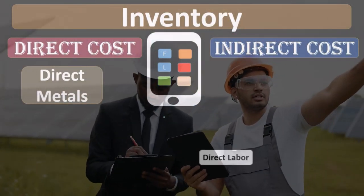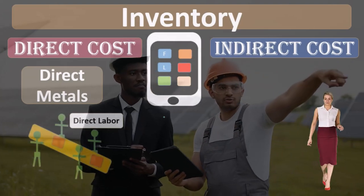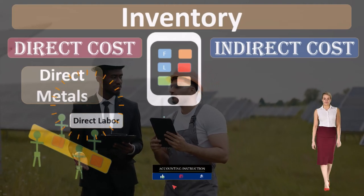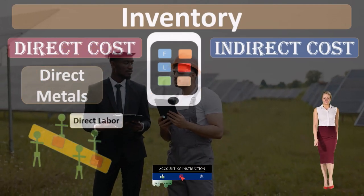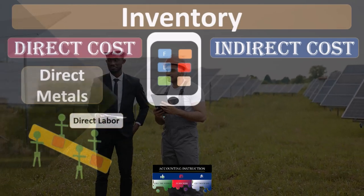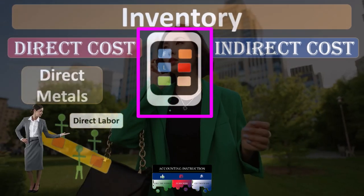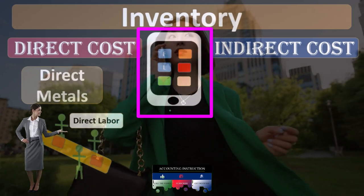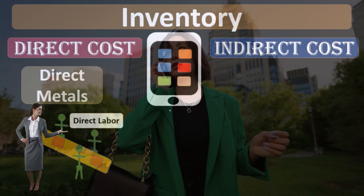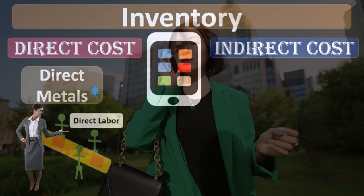Those might include obviously the direct materials and the direct labor. When we're considering the manufacturing process, it becomes important for us to be able to apply costs to specific inventory — in this case, this tablet — a specific piece of inventory, or a specific job, or to apply something out by process. In order to do that, we can think about the types of costs that we can apply directly.